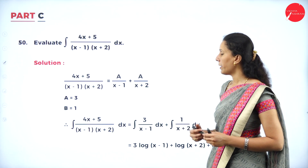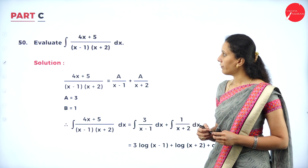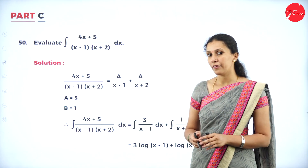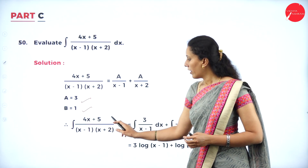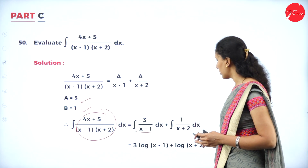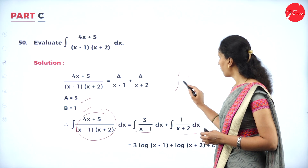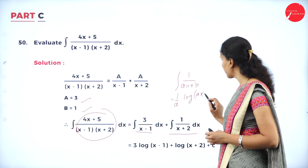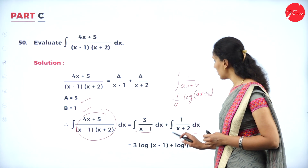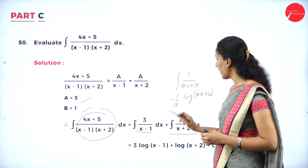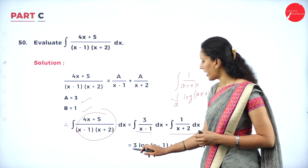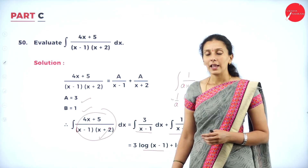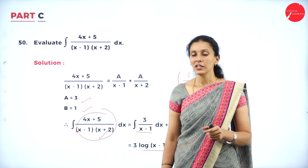Evaluate ∫(4x + y)/[(x-1)(x+2)] dx. Since this is a rational function, express it as two simple fractions using partial fractions. After finding the values of A and B, write the integral as two separate integrals. Using the formula ∫1/(ax+b) dx = (1/a) log|ax+b| + C, and since a = 1 in both terms, integrate each term separately to get 3 log|x-1| + log|x+2| + C.